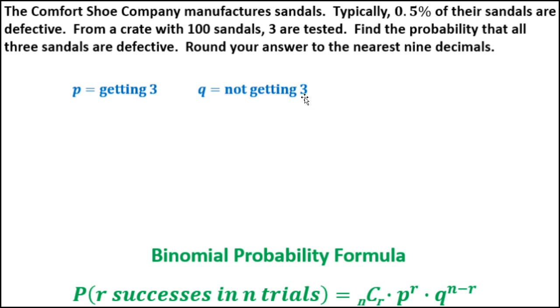And q is the probability of not getting three. In other words, when we test them, we will not have three that are defective. Not all three of them will be defective - either one or two will or none will.